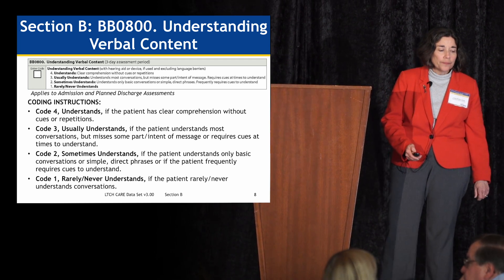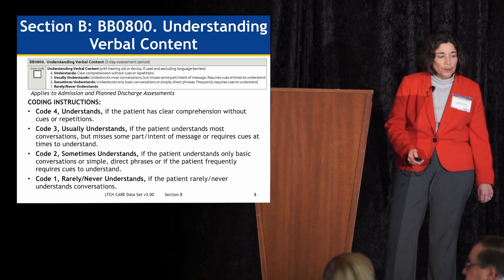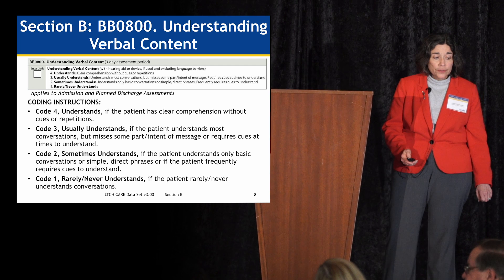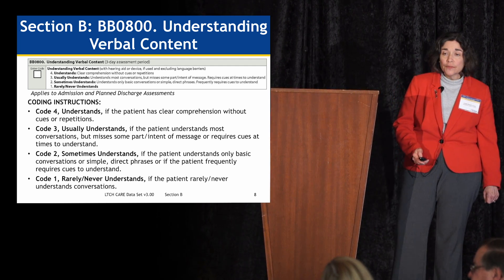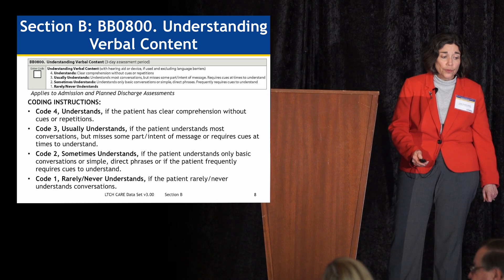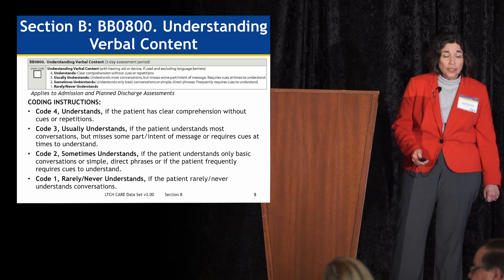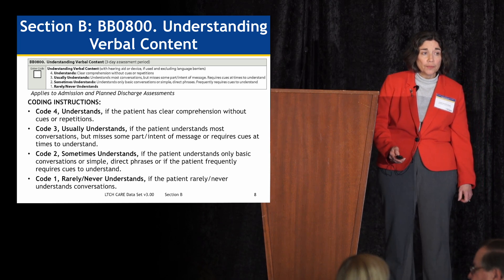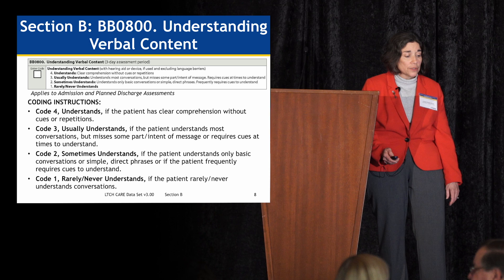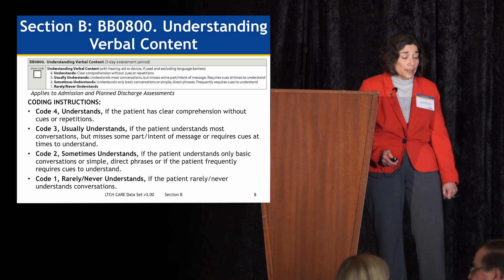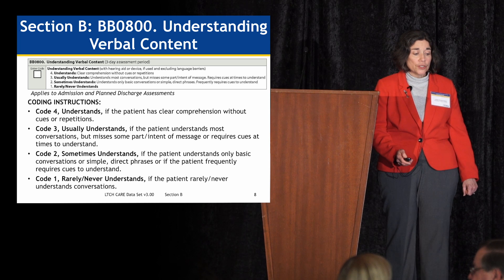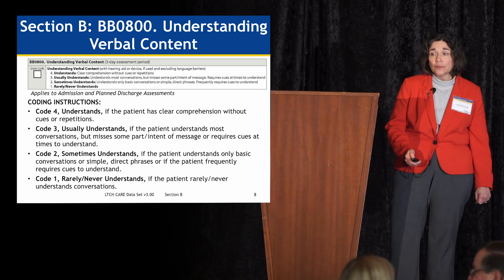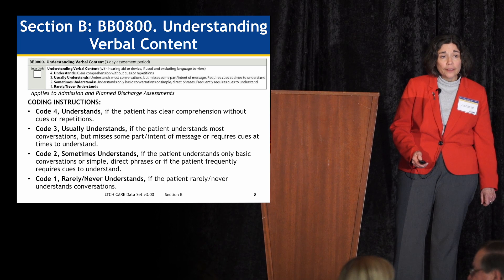For BB0800, understanding verbal content, there are four codes. Code 4, understands: the patient has clear comprehension without cues or instructions. Code 3, usually understands: the patient understands most conversation but misses some or part of the message, or requires cues. Code 2, sometimes understands: the patient understands only basic conversation or simple direct phrases, or frequently requires cues. Code 1: rarely or never understands.